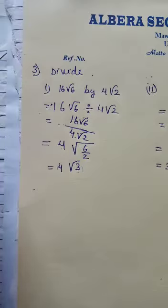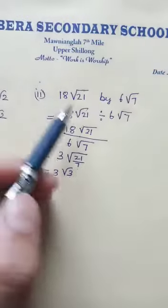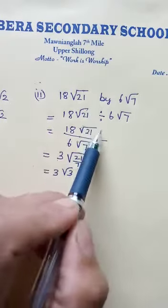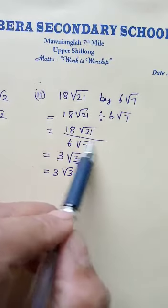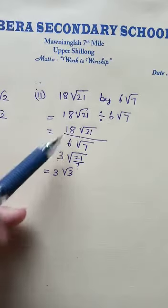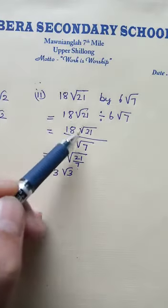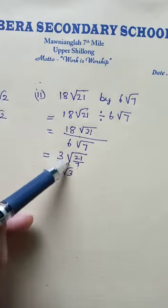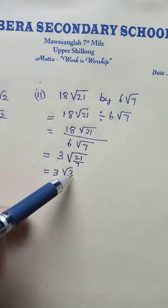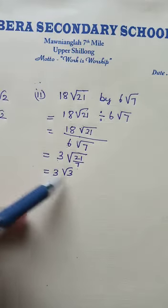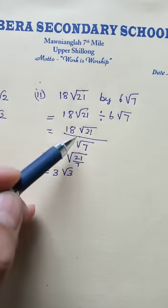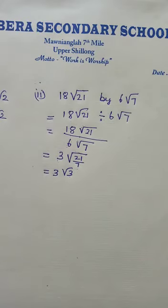3 is alone under the root — we cannot take it out, so 4 outside and root 3 inside is the answer. Next: 18 root 21 divided by 6 root 7. Put the top number on top, bottom on bottom. 18 divided by 6 is 3 since they are outside the root. Same order, so put them under one root: 21 divided by 7 is 3. That is the answer. Remember, if the orders are not the same you cannot divide — you must convert to the same order first.